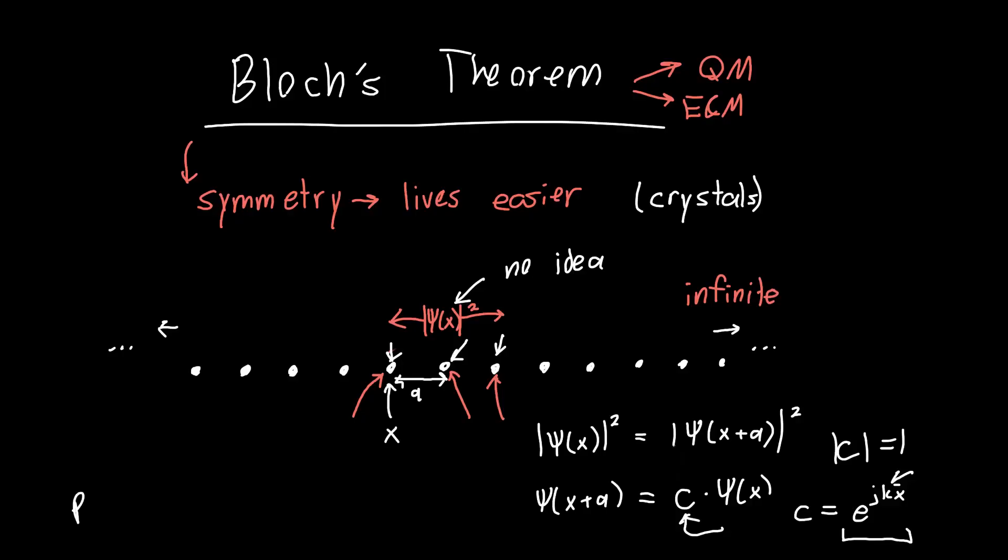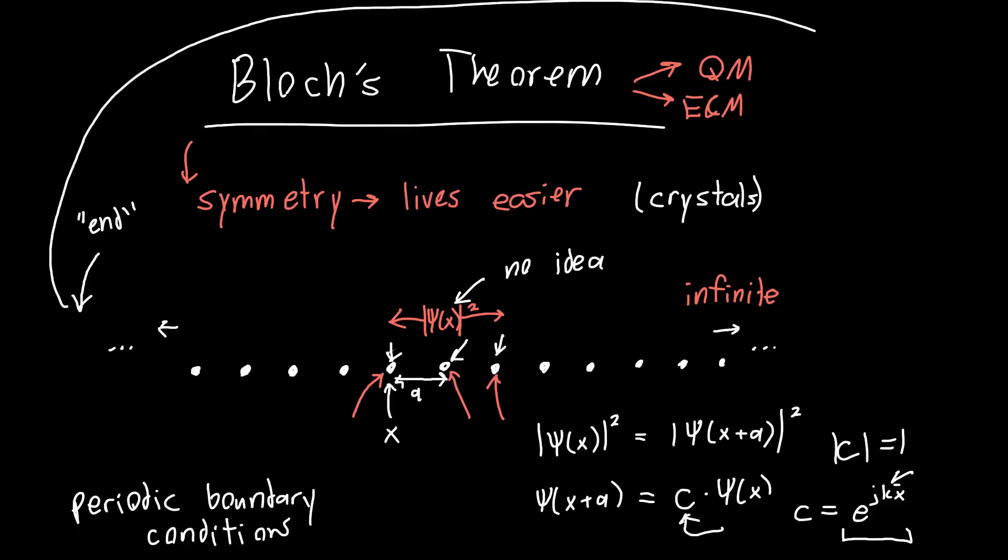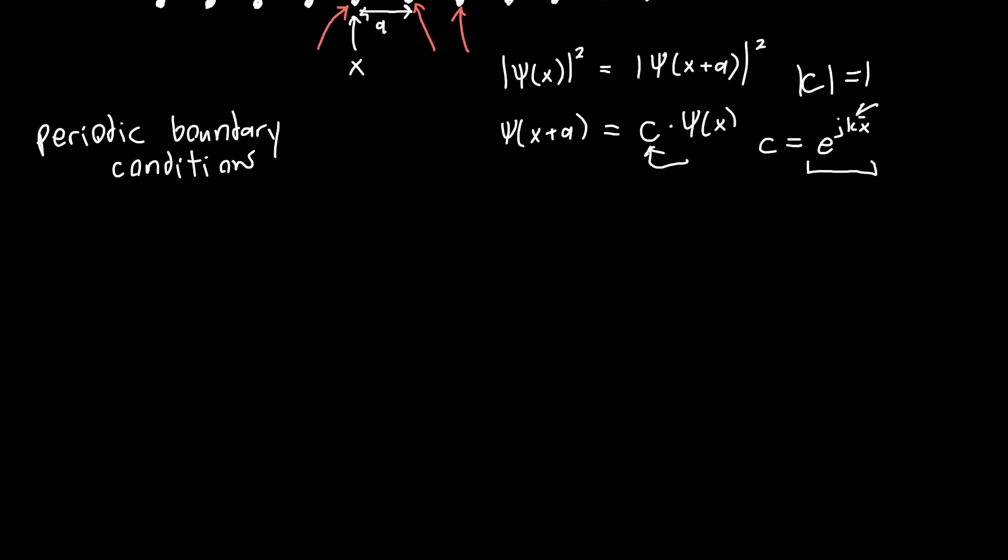And the fundamental trick that we use is we use what are called periodic boundary conditions. Periodic boundary conditions, which basically means we take the end, if you will. So we take the end of this crystal lattice, this infinite crystal lattice, and we connect it to the end on this side. Or we assume that our crystal lattice has the form of a circle. So if we were to redraw this, say with a fewer number of atoms, we assume that this has the form of a circle. So this is our lattice.